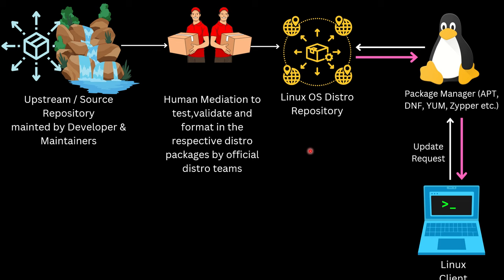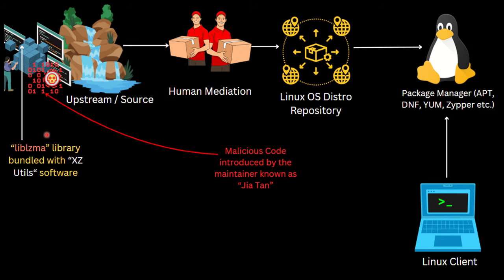In the XZ Utils scenario, the application was developed and maintained by Lasse Collin for over 15 years — he both developed and maintained it, fixing bugs and adding new features, largely alone. Since it became widely used, other developers started contributing about three years ago. One contributor used the GitHub account name 'Jia Tan.' Behind this account there may be a large threat actor group, not just one person.